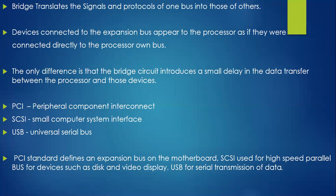The devices on the second bus communicate as if they are directly connected to the processor, but they are not. The only difference is that the bridge circuit introduces a small delay in data transfer between the processor and those devices. Devices connected to the processor bus won't feel any delay, but devices on the second bus will experience this small delay.